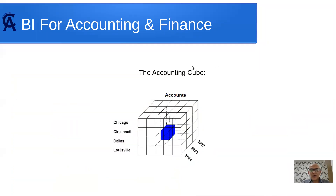The accounting cube is special because one of its dimensions is special. The time dimension is like in any other cube - you can have years, quarters, etc. Locations like Chicago, Cincinnati, and so on form a geography dimension. Yesterday we talked about product; this time I replaced it with accounts, and accounts is a special dimension. Let's dive in and see how we analyze an accounting cube, and I'll show you how we build one with Python in Django.